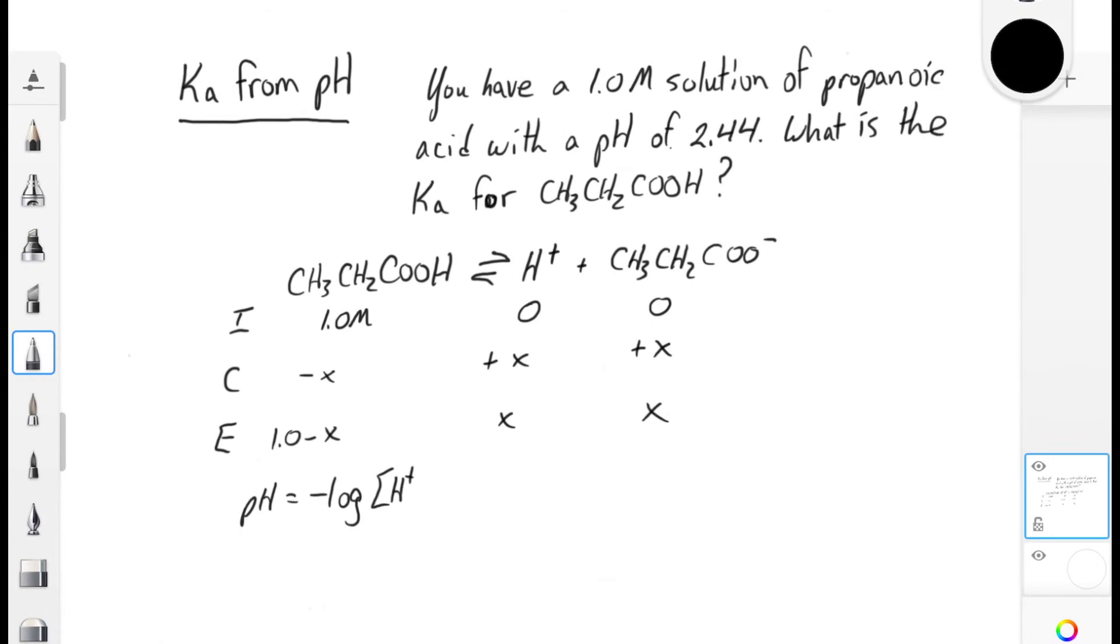And that value is 0.0036 molar. And because we know that the value of X is constant for H-plus and the propanoate ion, we know the equilibrium value for the propanoate ion as well. We also know the equilibrium value for propanoic acid. This means that we can set up our Ka expression and solve for Ka.